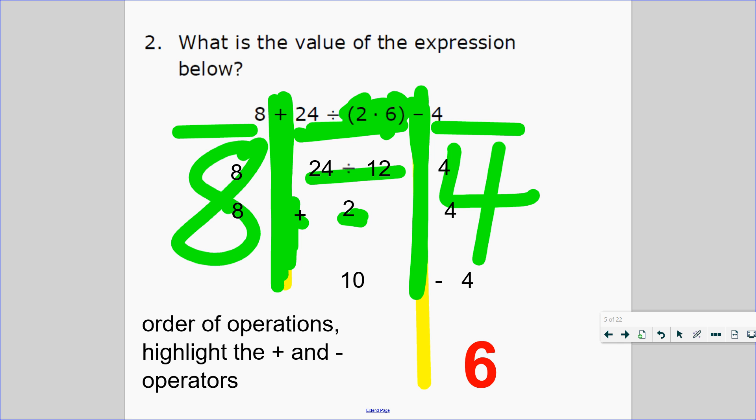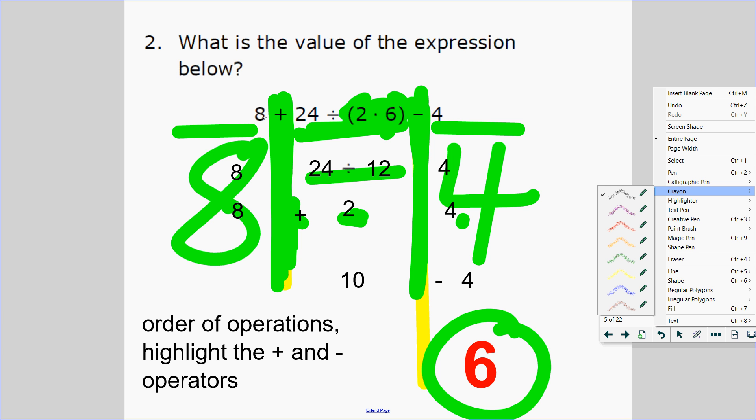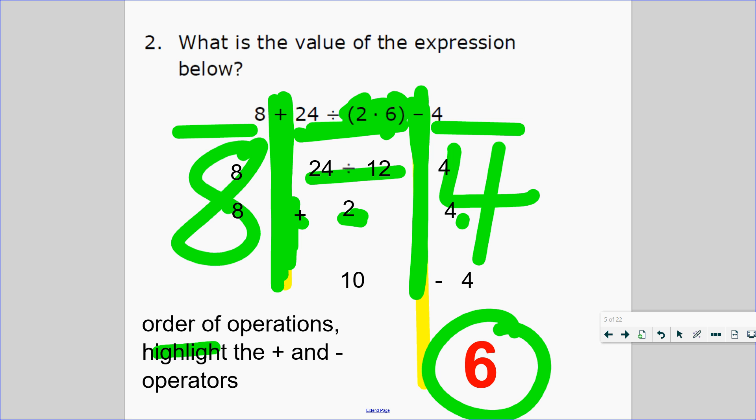What is 24 divided by 12? 2. So we take the 8, we add 2 to it, which is 10. Then you take away the 4, you're left with 6. So notice again, adding and subtracting are the least important operations. Please do not add 8 plus 24 then divide by 12. No. Adding and subtracting are the least important operations. Highlight the adding and subtracting operators so you understand that's the least important operation.